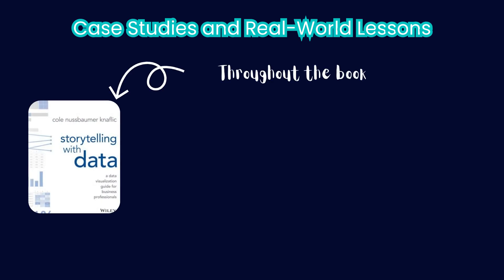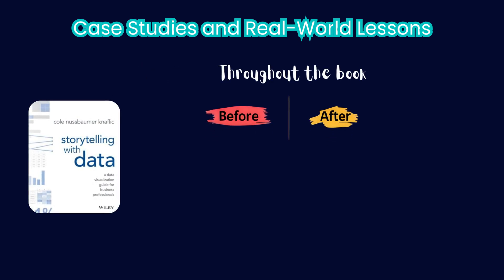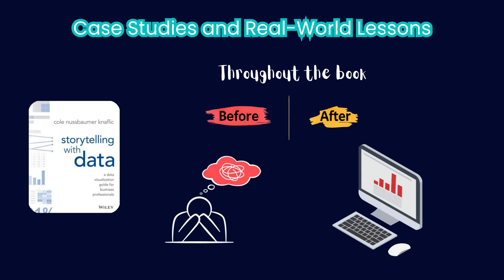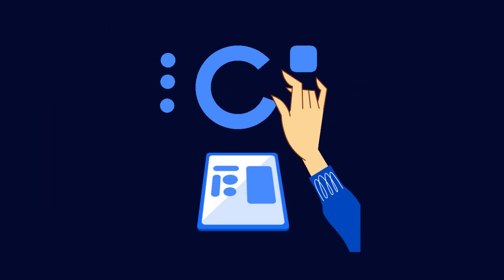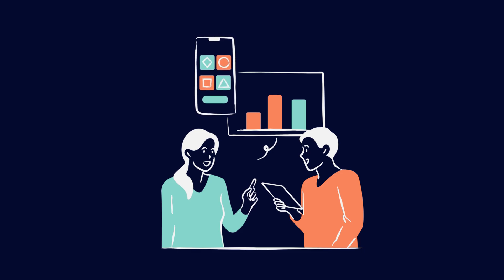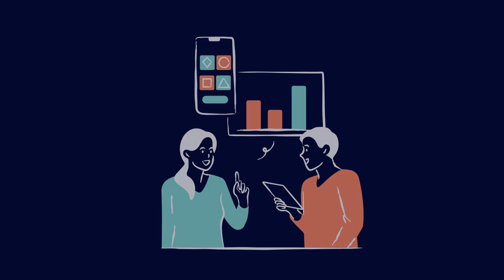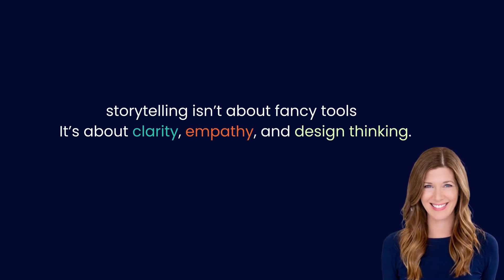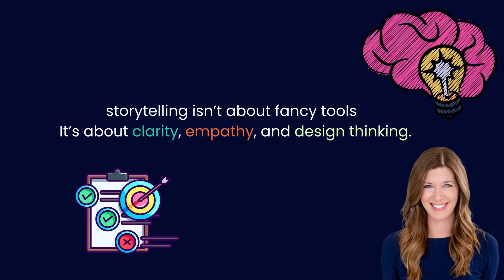Number seven: case studies and real-world lessons. Throughout the book, Cole includes before-and-after examples where cluttered, confusing visuals become simple, powerful stories. You'll see dashboards turned into clean, single-message visuals, reports transformed into executive-ready narratives, and presenters learning how to make their message land in 30 seconds instead of 10 minutes. She proves that good storytelling isn't about fancy tools — it's about clarity, empathy, and design thinking.